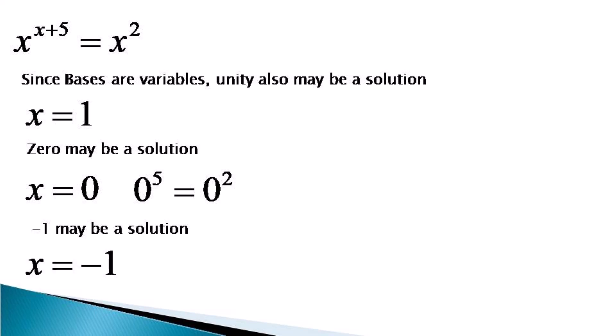We put x equals minus 1. So the equation becomes minus 1 raised to the power 4 equals minus 1 square, which completely satisfies the given equation. So this equation has got a fourth root also, which is x equals minus 1.